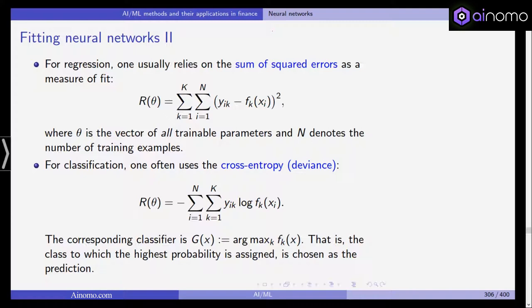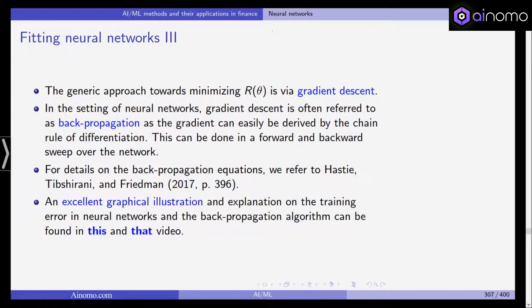Now these are, in the sense, the error functions, the cost functions. We need to minimize these to train our neural network and the generic approach here is via gradient descent. You might know gradient descent also from our computational finance lecture. Gradient descent is the idea that in order to minimize a function, this is actually generic optimization.